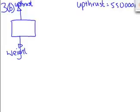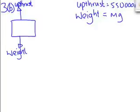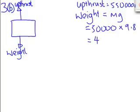We're told in the question that the upthrust is 550,000 newtons. What about the weight? Well, weight is equal to mg, and we're told that the mass of the submarine is 50,000 kilograms. So we find that the submarine has a weight of 490,000 newtons.